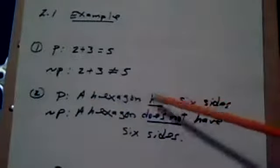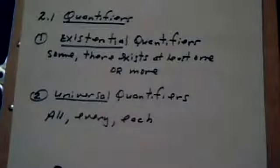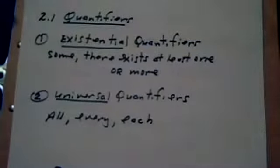We have quantifiers: existential and universal. The existential would be like 'some,' 'there exists,' 'at least one or more.' And the universal: 'all,' 'every,' and 'each.' These are like opposites.